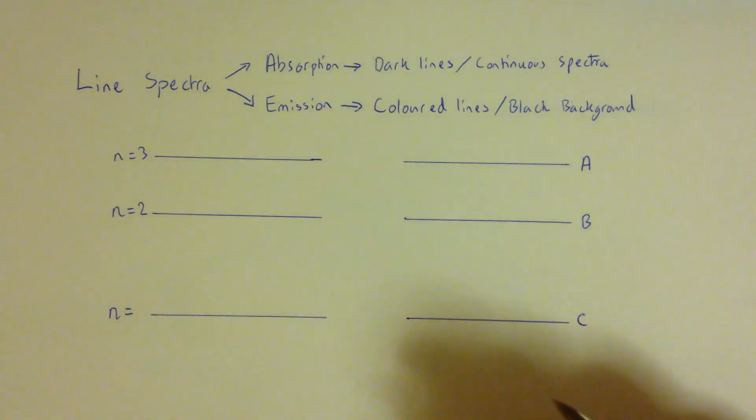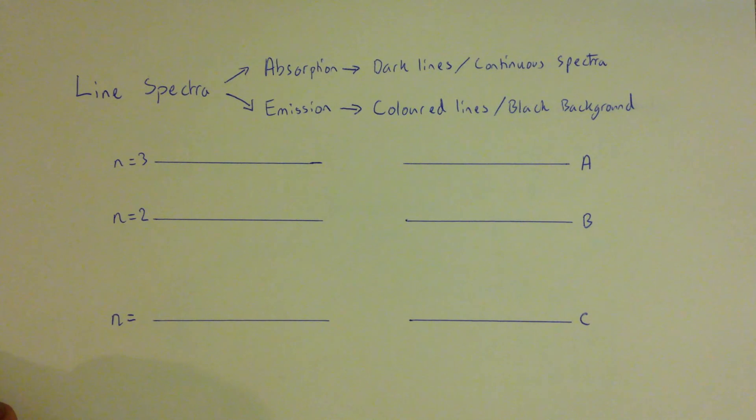So if we look at some energy levels as an example, we'll call them A, B, C, and A, B, and C.